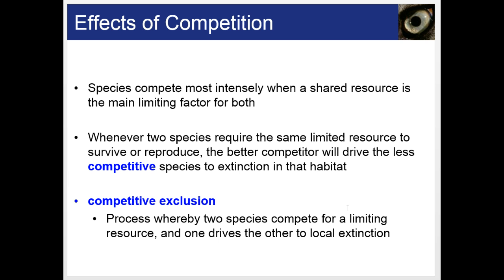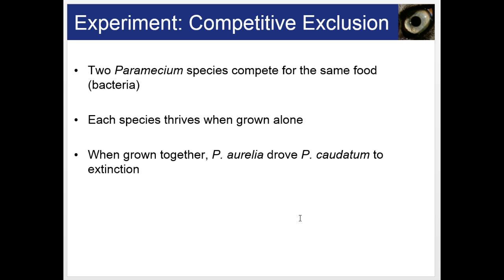The effects of competition: species compete most intensely when a shared resource is the main limiting factor for both. Whenever two species require the same limited resource to survive or reproduce, the better competitor will drive the less competitive species to local extinction in that habitat — this is called competitive exclusion. For example, two paramecium species compete for the same food, bacteria. Each species could thrive when grown alone, but when grown together, the better-adapted one, P. aurelia, drove P. caudatum to extinction.